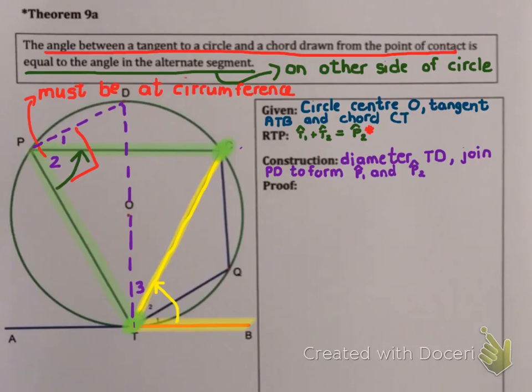Okay, let's have a look at our proof. First of all, I know that I drew a diameter and theorem 3 says the angle at the circumference that's created by diameter is 90 degrees. And my reason? Angles in a semicircle.